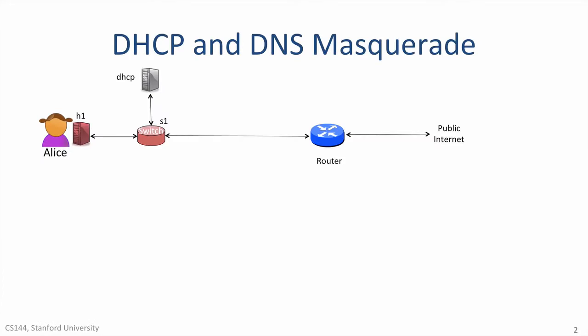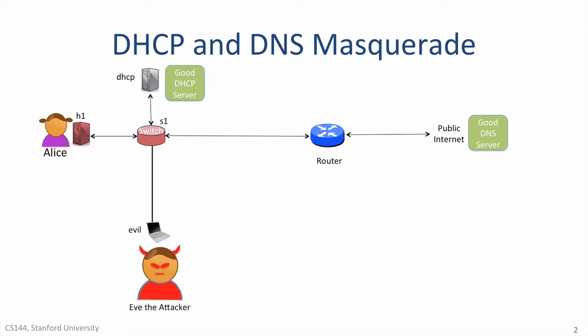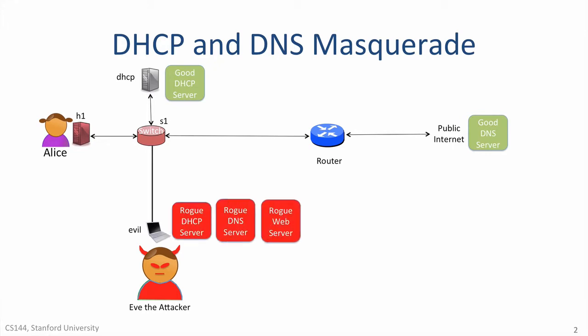In our demo, three hosts are connected to switch S1. Host H1 is Alice's machine, which is running a good DHCP client. The host DHCP runs a good DHCP server, which configures Alice's machine to use a good DNS server out on the internet. Host Evil is run by Eve the attacker and runs a rogue DHCP server, a rogue DNS server, and a rogue web server.